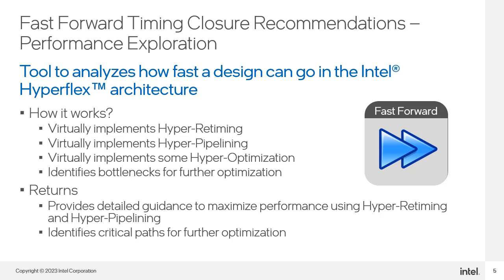As part of the Intel Quartus Prime Pro software, Fast Forward Analysis works by virtually implementing HyperRetiming, HyperPipelining, and some HyperOptimization design modifications for you. By making these virtual changes to your design, it can then show you what performance gains are possible if you implement these changes yourself. Fast Forward returns to you a detailed list of the changes made to your design and the potential clock speeds associated with those changes. If you require clock speeds beyond what Fast Forward predicts, it also provides you with a path in your design that is serving as the bottleneck for even further performance gain.